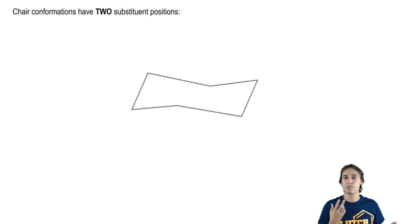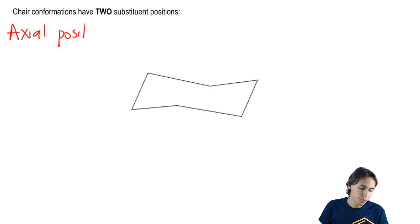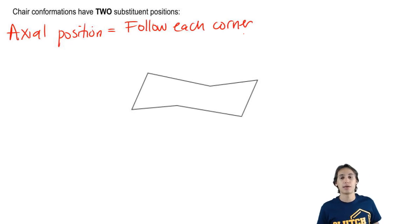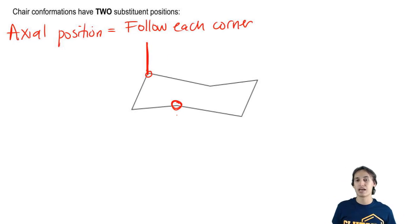The first and the easiest positions to visualize are what's called the axial positions. The axial positions are going to follow each corner. So what that means is that if your corner is facing up, then your axial position is going to face straight up. So you can see that this corner was facing a little bit on the upside. What about this corner? What direction is that one facing?